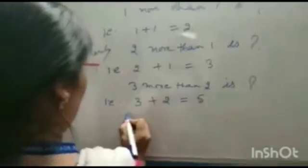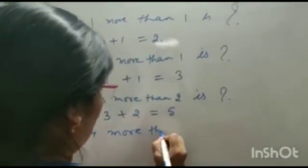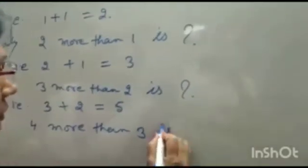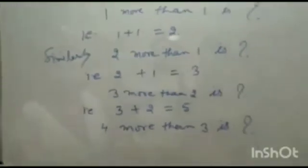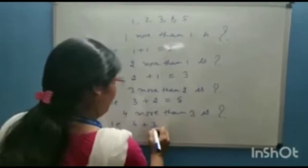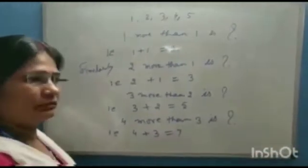4 more than 3 is what? That is, 4 plus 3 equals 7. Okay?